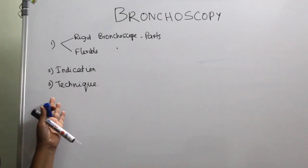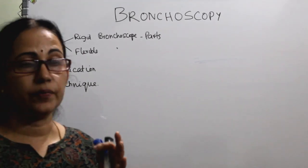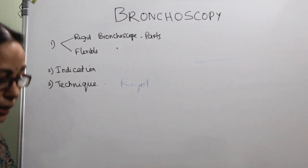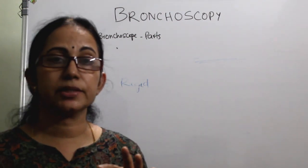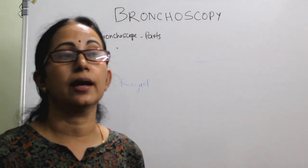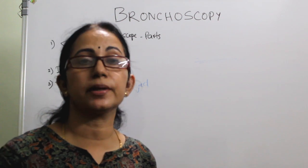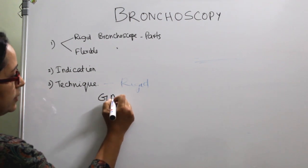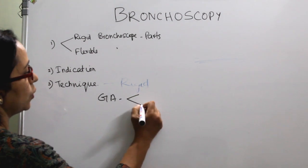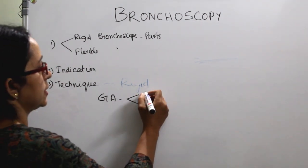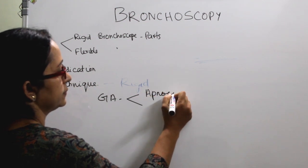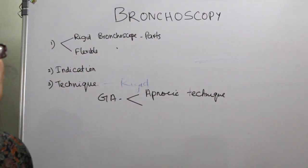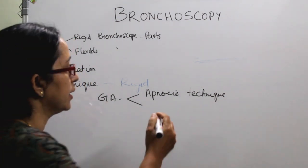Regarding the technique of rigid bronchoscopy, for any surgical technique the explanation should be under the headings of anaesthesia, positioning, steps of surgery, postoperative care, and complications. For rigid bronchoscopy, general anaesthesia is always required. It can be a closed system using apneic ventilation, or an open system using side port Venturi jet ventilation. Flexible bronchoscopy, however, can be done under local anaesthesia.